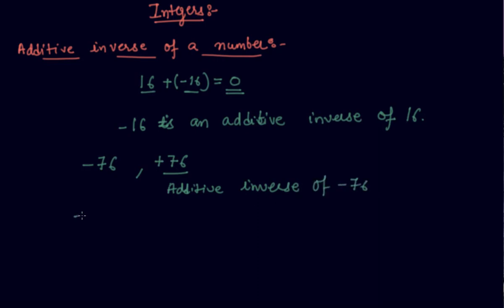And if you're asked in the exam to find the additive inverse of 76, if there is a positive sign or no sign, it means it is positive in nature. So you will write a negative sign and the same number. So -76 is the additive inverse of 76.